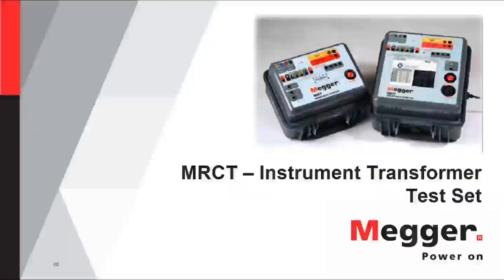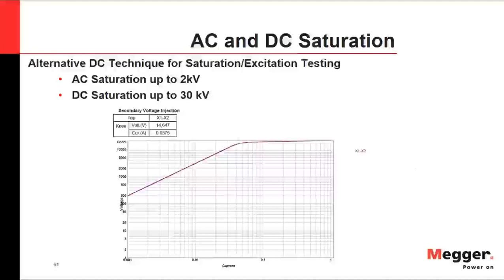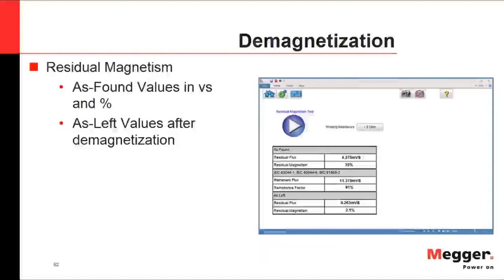Let's talk about the MRCT, Megger's instrument transformer test set. This device supports both AC and DC saturation. The alternative DC technique for saturation/excitation testing allows AC saturation up to 2 kV and DC saturation all the way up to 30 kV. In a field example shown, a CT was tested with a saturation knee point of approximately 20,000 volts.